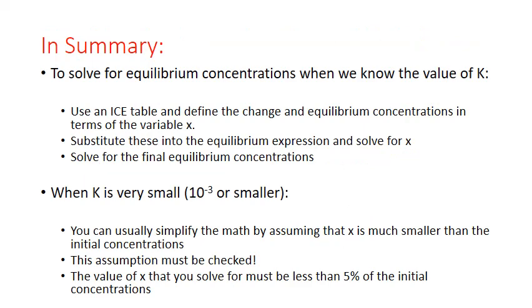In summary, to solve for equilibrium concentrations when K is known: use an ICE table, define changes in terms of variable X, substitute equilibrium concentration formulas into the equilibrium expression, and solve for X to get the final concentrations. When K is very small — on the order of 10 to the negative 3 or smaller — you can simplify by assuming X is negligible compared to initial concentrations, but you must verify X is less than 5% of the initial concentration.